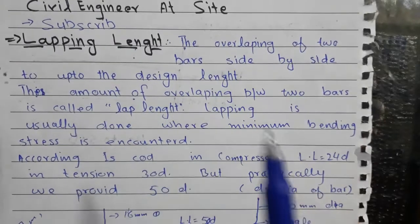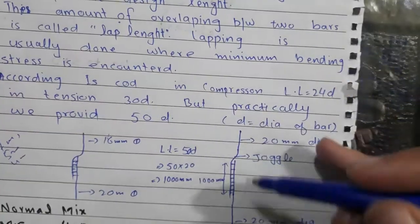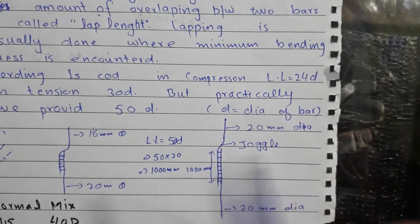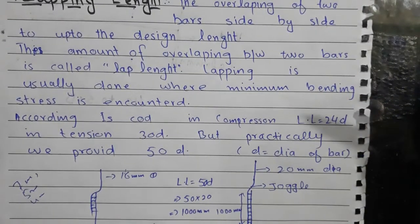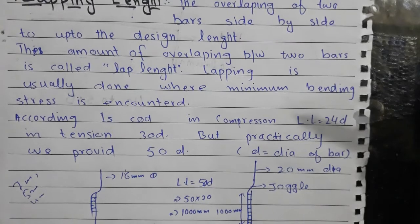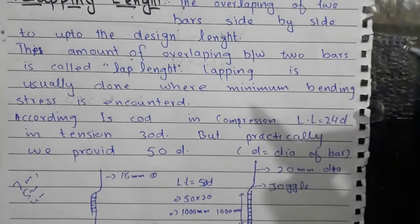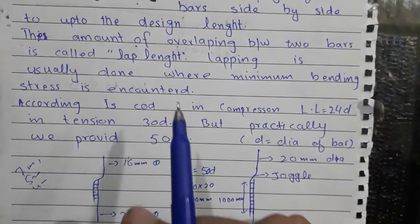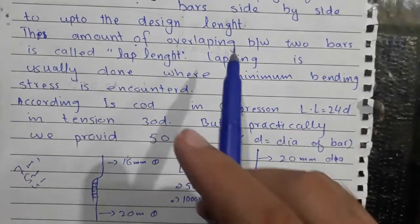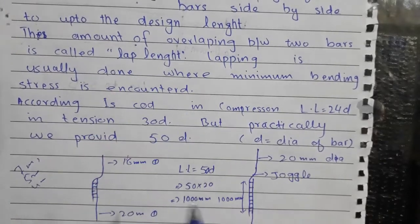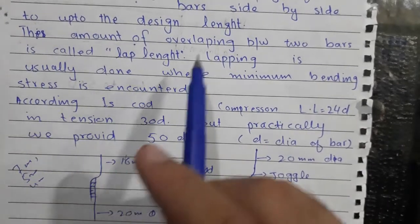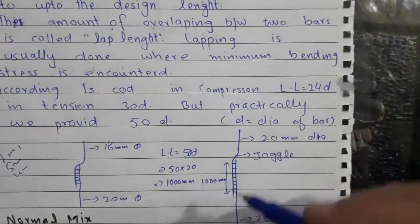Now here we will discuss the definition of overlapping length. The overlapping of two bars placed side by side up to the design length — the desirable length — is called overlapping. For example, if you want the column up to 12 meters, 7 meters, or 8 meters, that is your design or desirable length. The amount of overlapping between two bars is called lap length.